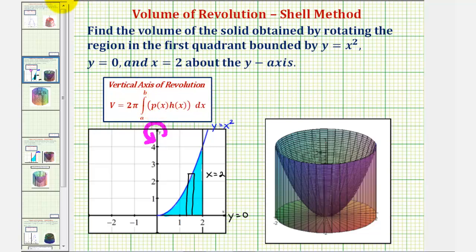So looking at this rectangle, notice how the width would be delta x, which is why we're integrating with respect to x, and then p of x, the distance from the axis of rotation,